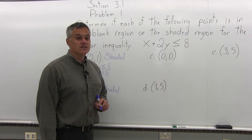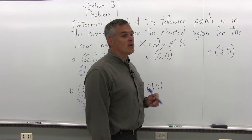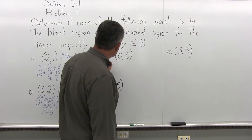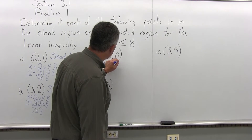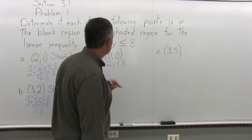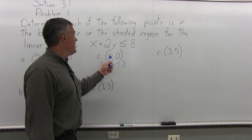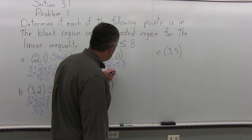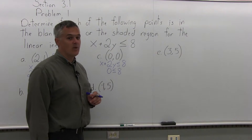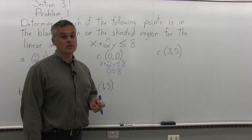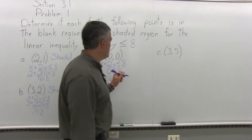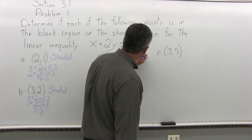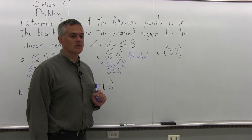Part c: is the point 0 comma 0 in the shaded region or the blank region of the linear inequality? Start with x plus 2y is less than or equal to 8, and put in 0 for x and 0 for y. Everything zeroes out, giving 0 is less than or equal to 8, which is certainly true. So the point (0, 0) is also in the shaded region.